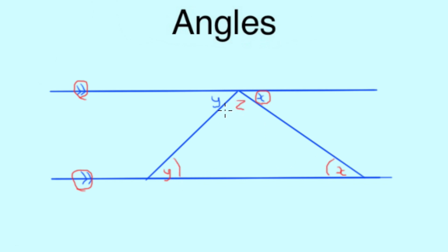If we label our new missing angle Z, we know that because angles in a straight line make 180 degrees, then our Y, Z and X must add together to make 180 degrees.